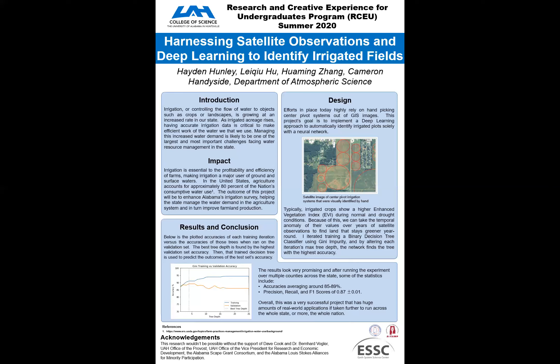The program then runs the best tree onto the untouched set — the test set — showing what the trained tree might do to completely new data. This project was able to achieve accuracies of around 85 to 89% on average, with outliers ranging up to 94%. The precision score, the recall score, and the F1 scores all lie within 0.87 plus or minus 0.01. With statistics like these, it's hard to say that this project wasn't a majorly successful one.